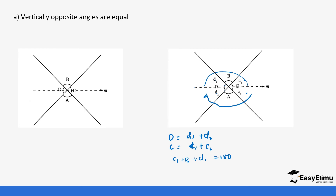The same applies to the angles below the line. If we take C2 plus A plus D2, we'll get 180. Remember, because C1 and C2 make up C, they are equal — so C1 equals C2 and D1 equals D2. If that's the case, then because C1 plus D1 equals 180 and C2 plus D2 plus A equals 180, that tells you that angle A equals angle B.